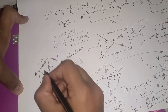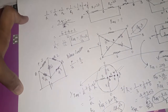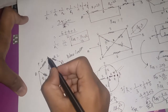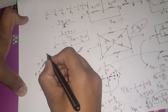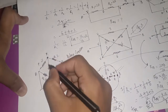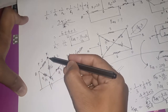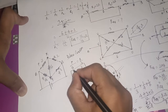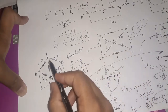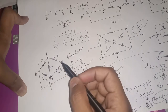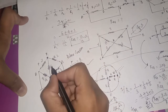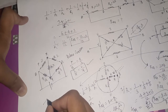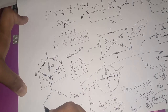The Wheatstone bridge balance condition is P upon Q equals R upon S. Here P is this, Q is this, R is this, S is this. If P upon Q equals R upon S, then the system is balanced. In a balanced condition, the potential at the two middle points is the same — if they are X and Y, then X and Y have the same potential, meaning no current flows through the middle resistor. Here 2 by 4 equals 2 by 4 — both are equal, so the balance condition is satisfied. This means the 6 ohm register has no role here.